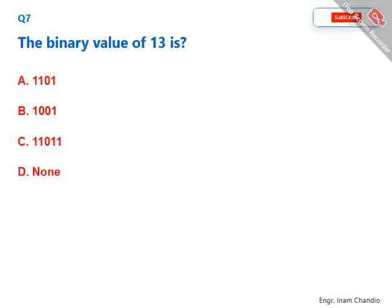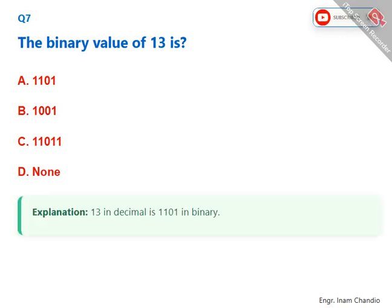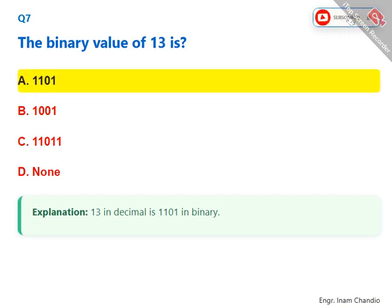The binary value of 13 is? 13 in decimal is 1101 in binary. The correct answer is A. 1101.